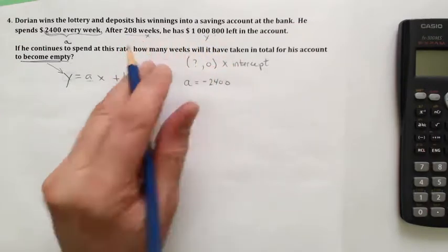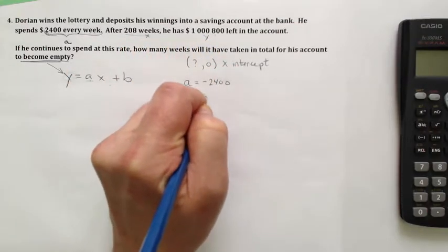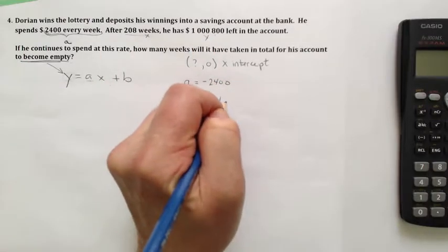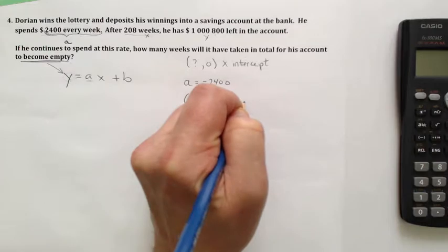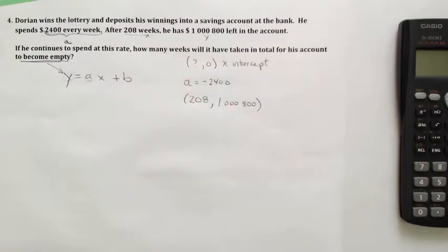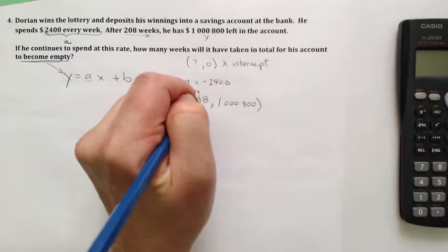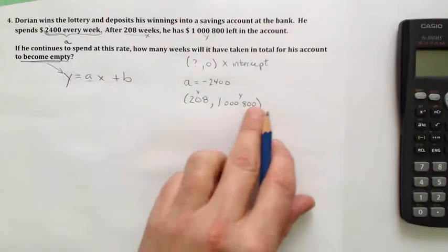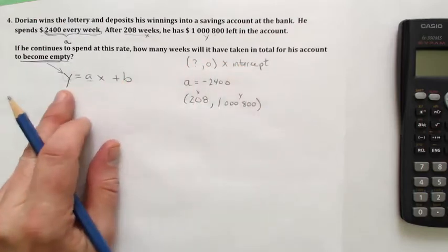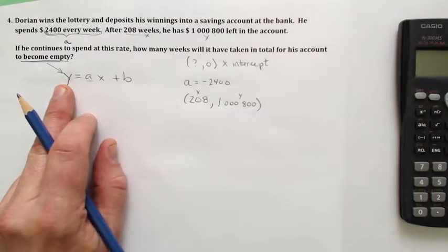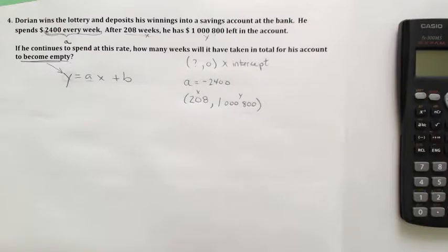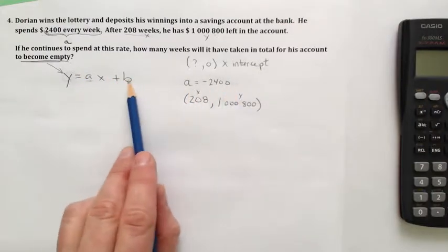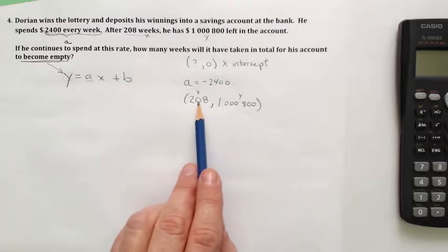The other thing they gave us was a piece of information that said, hey, after 208 weeks, we have $1,000,800 left in the account. So that's an x and that's a y. Before we can answer this question of how many weeks go by before the bank account hits zero, we need a fully rendered equation, which means we need a b.